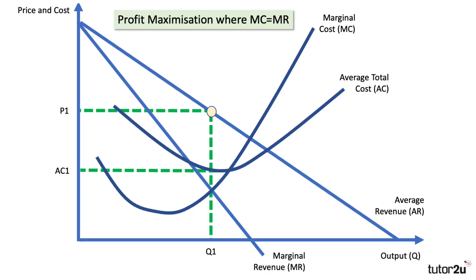This diagram shows what happens if we move from one objective to another. It's a firm in imperfect competition. You maximize profits at Q1, where marginal cost meets marginal revenue, giving a price of P1 and a unit cost of AC1. And of course, that gives you a supernormal profit, as shown by the yellow shaded area.